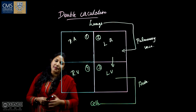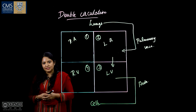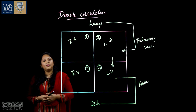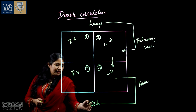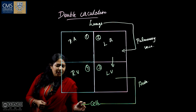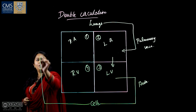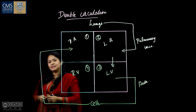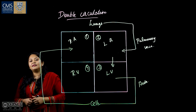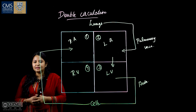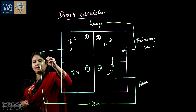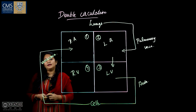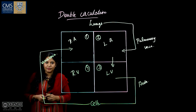Inside the cell, the oxygenated or pure blood is utilized and converted into deoxygenated or impure blood. This deoxygenated blood then goes back to the right atrium. From the cells, the deoxygenated or impure blood is carried out by another blood vessel called the vena cava, which carries impure blood from different parts of the body back to the heart.